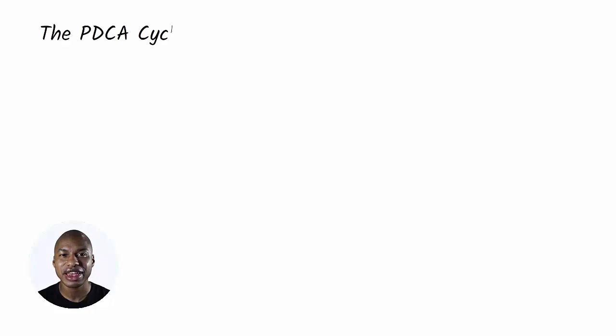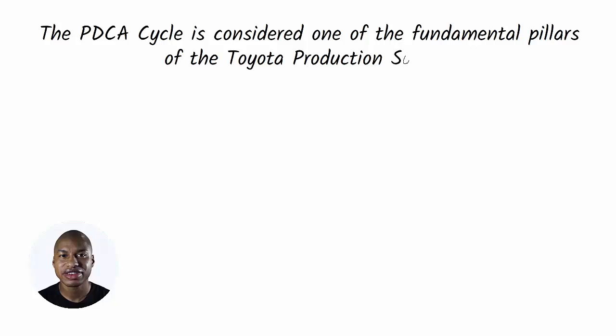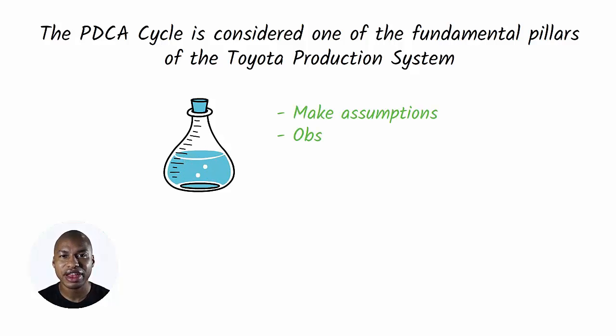The PDCA cycle is considered one of the fundamental pillars of the Toyota production system. Deming argued that organizations should think about change and improvement like a scientific experiment. They should make assumptions, observe phenomena, perform experiments, and learn from failures by refuting hypotheses.